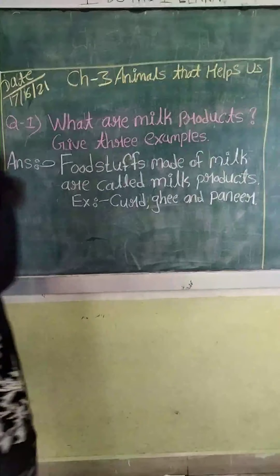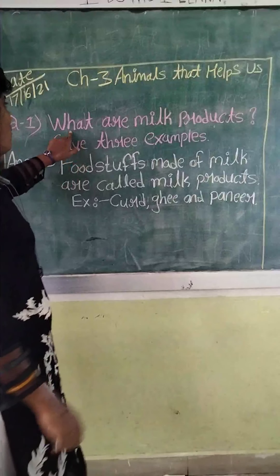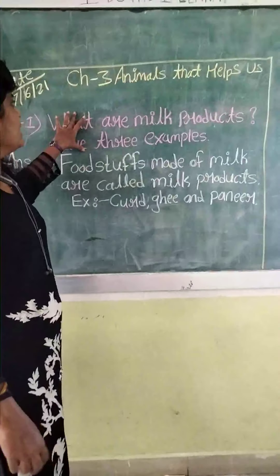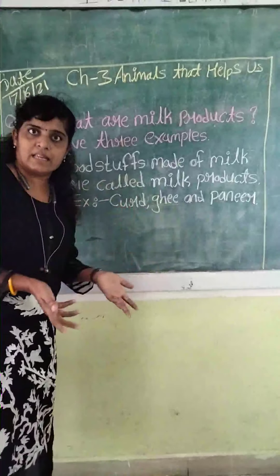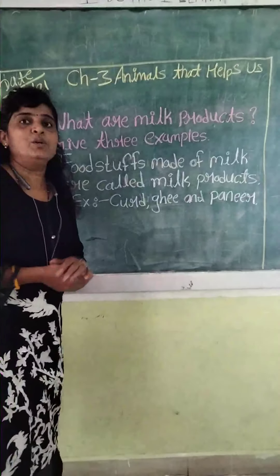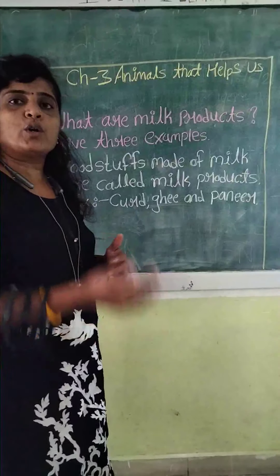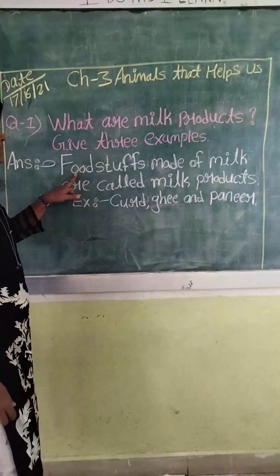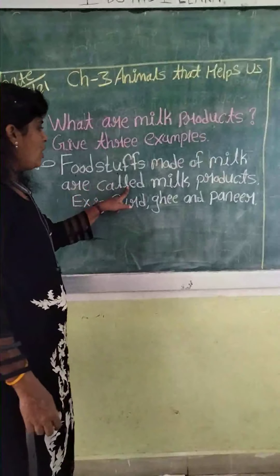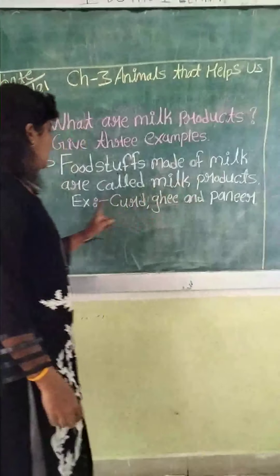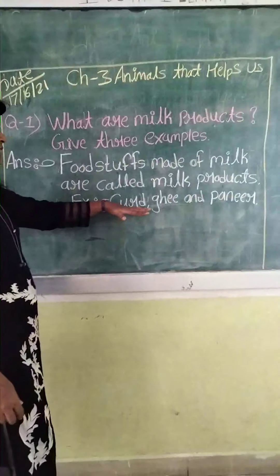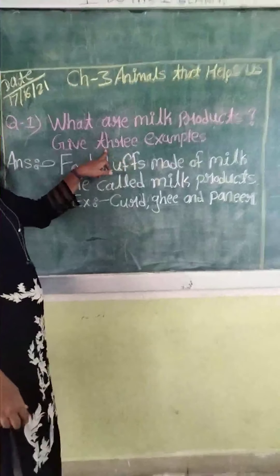Let me explain: What are milk products? Give three examples. Milk products are foodstuffs made from milk. We need to write three examples of milk products.